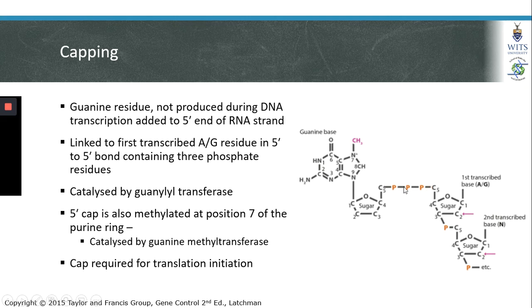In addition to the 5'-to-5' bond formed by the guanine base in the 5' cap, this guanine is also methylated at position 7. This reaction is catalyzed by guanine methyltransferase. These post-transcriptional modifications are what promotes translation of the mRNA into a protein, as mRNAs that are transcribed are being prepared for translation.